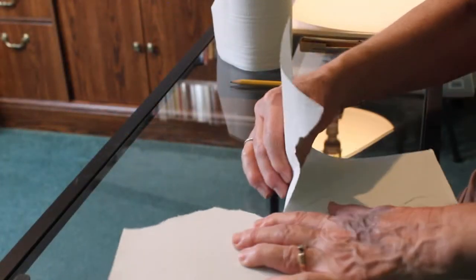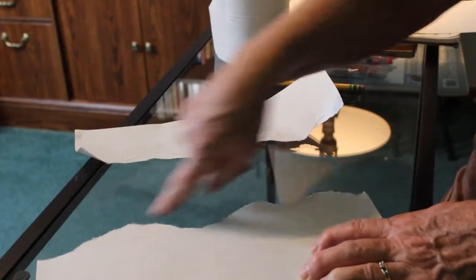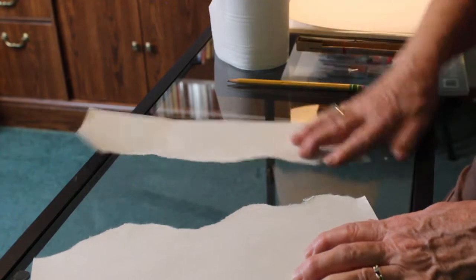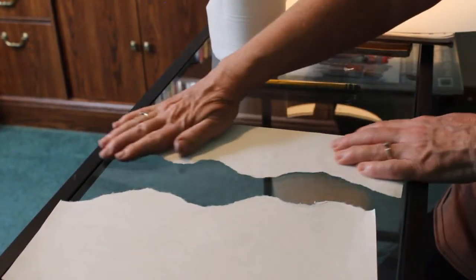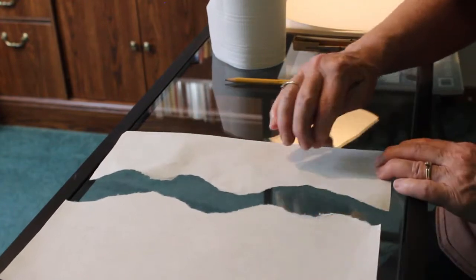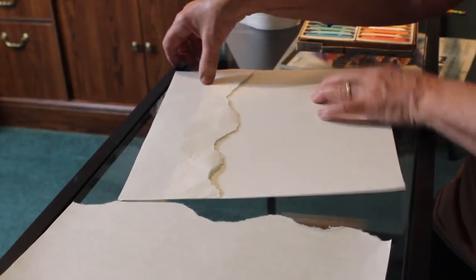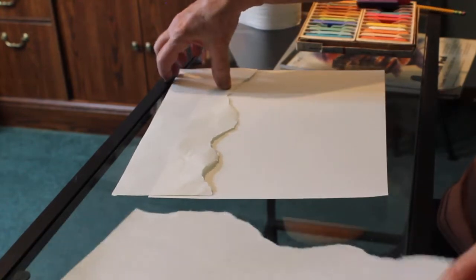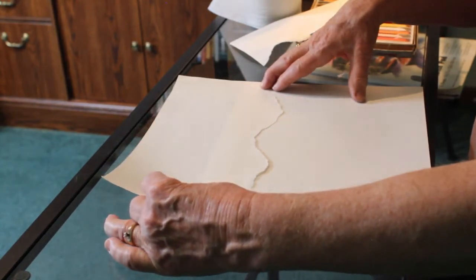We do want to tear it instead of cut it because we want kind of jaggedy raggedy edges. So now we have these rough edges here that's going to make for a nice look when we're done using it as a stencil. I'm going to be using both this edge and that edge so I'm going to look and see which way do I want this in my top mountains. I kind of like this way.